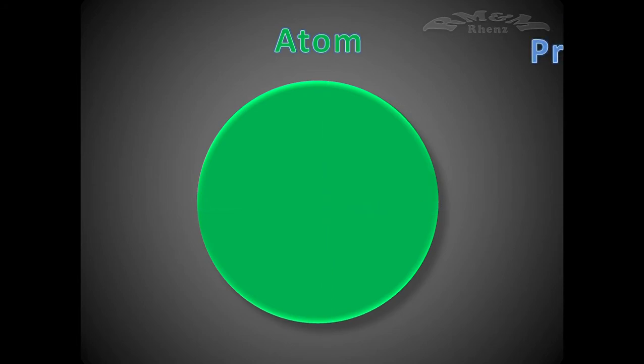Atoms are composed of particles called protons, electrons, and neutrons. The atomic nucleus is the small, dense region consisting of protons and neutrons at the center of an atom.